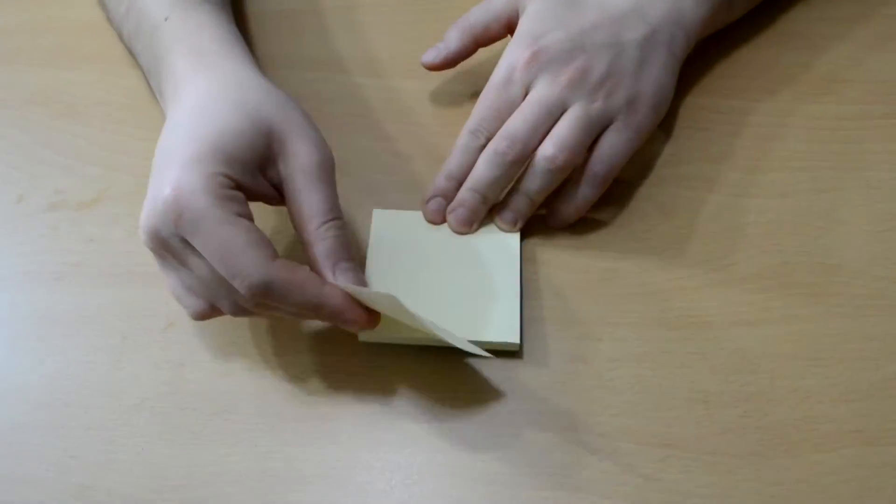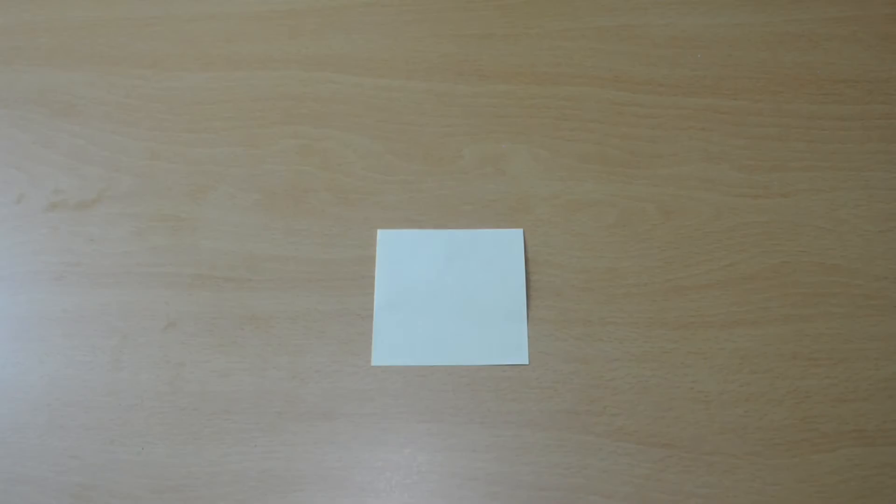Today I'm going to show you how to make a quick brain teaser out of a square piece of paper. We need to cut the paper into these four triangles.